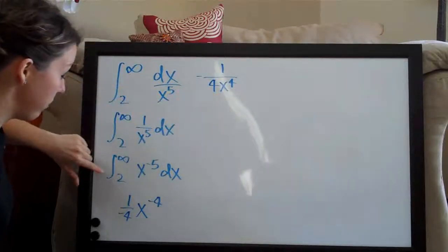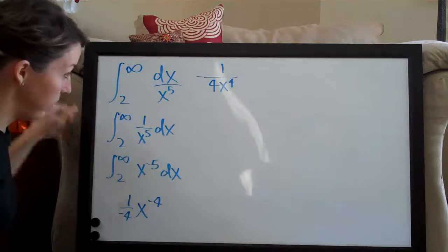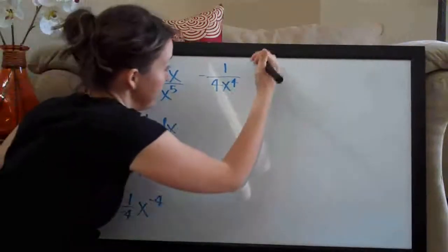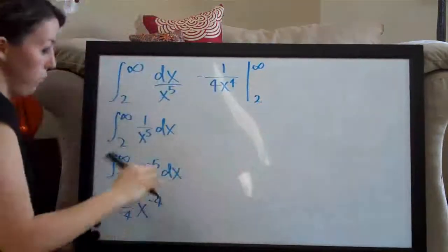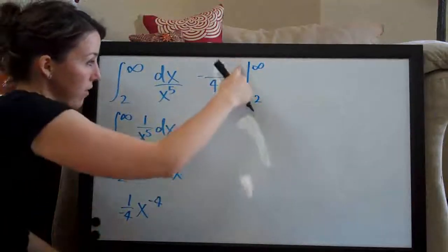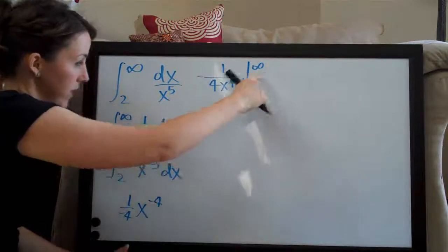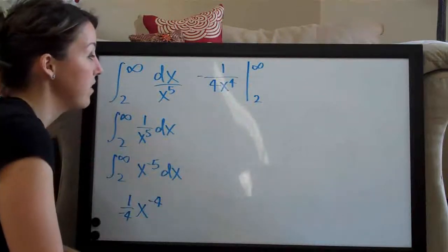So this is our final integral here. We just have to now evaluate it on two to infinity. And the way that we can do that is once you've taken an integral, you draw this line and you write two to infinity and then we evaluate.